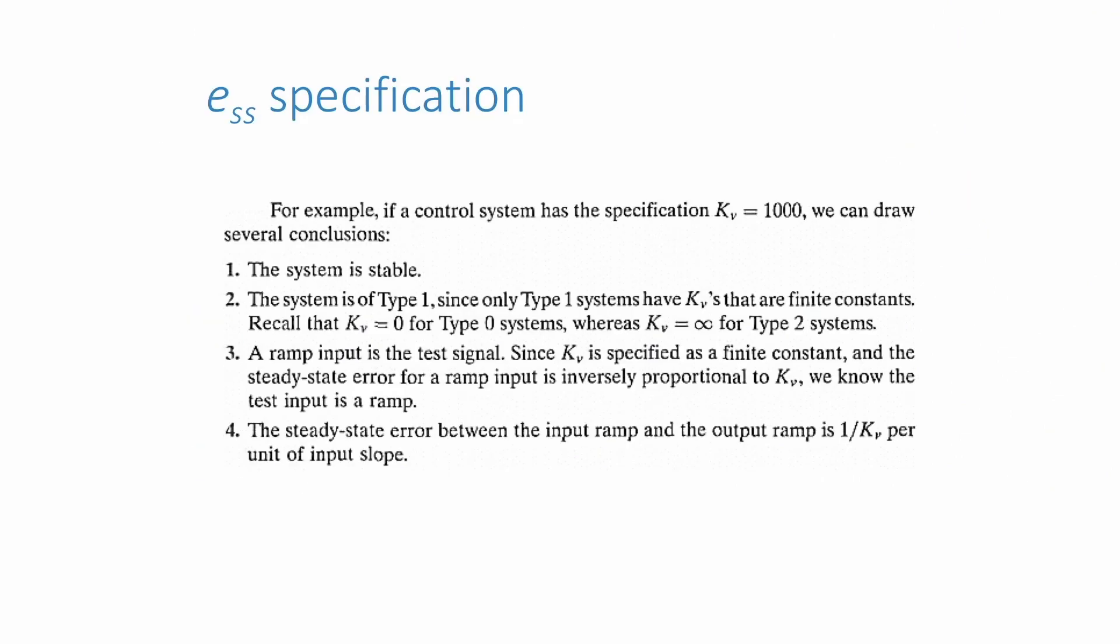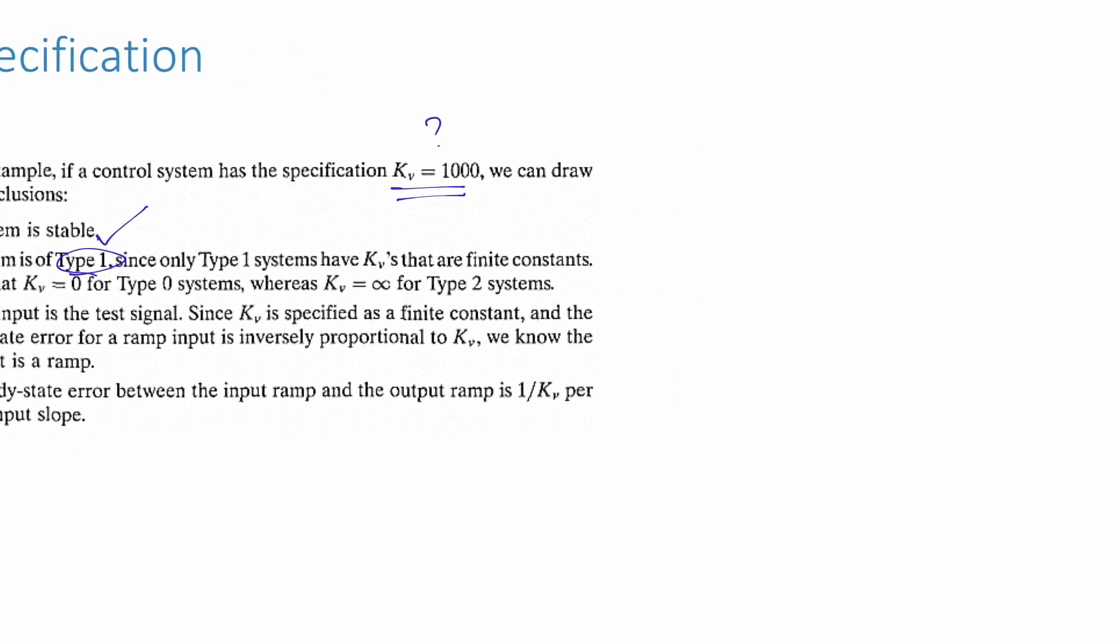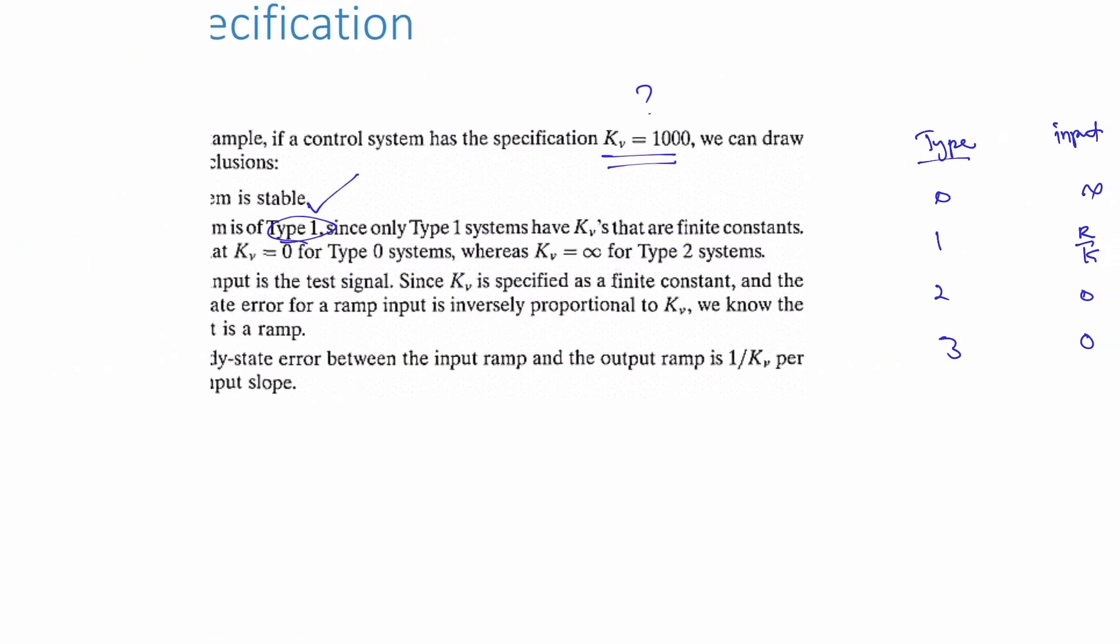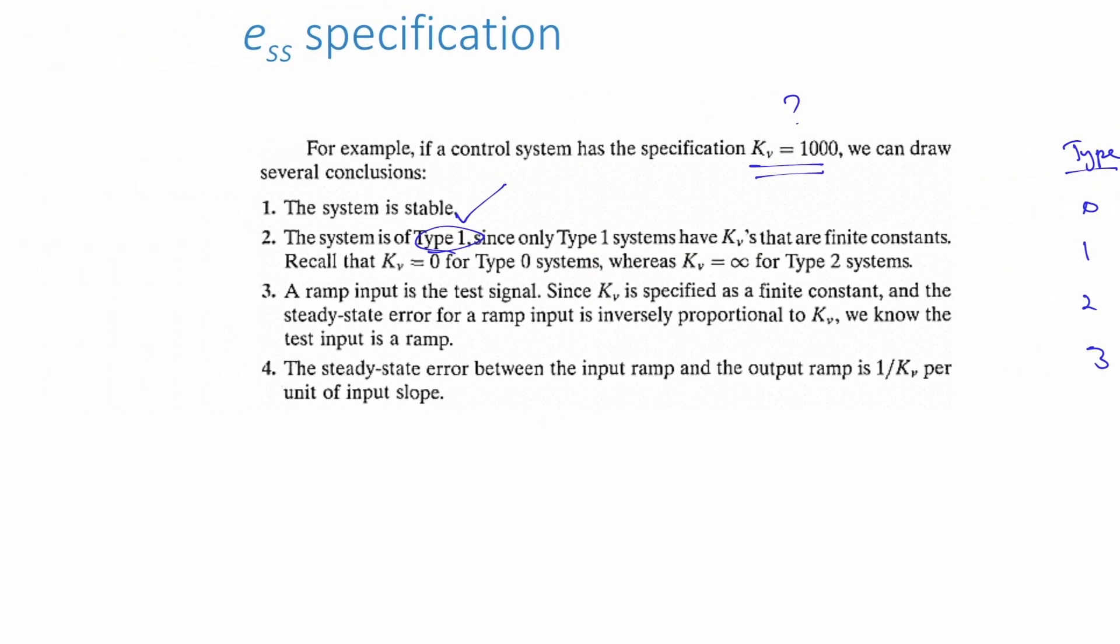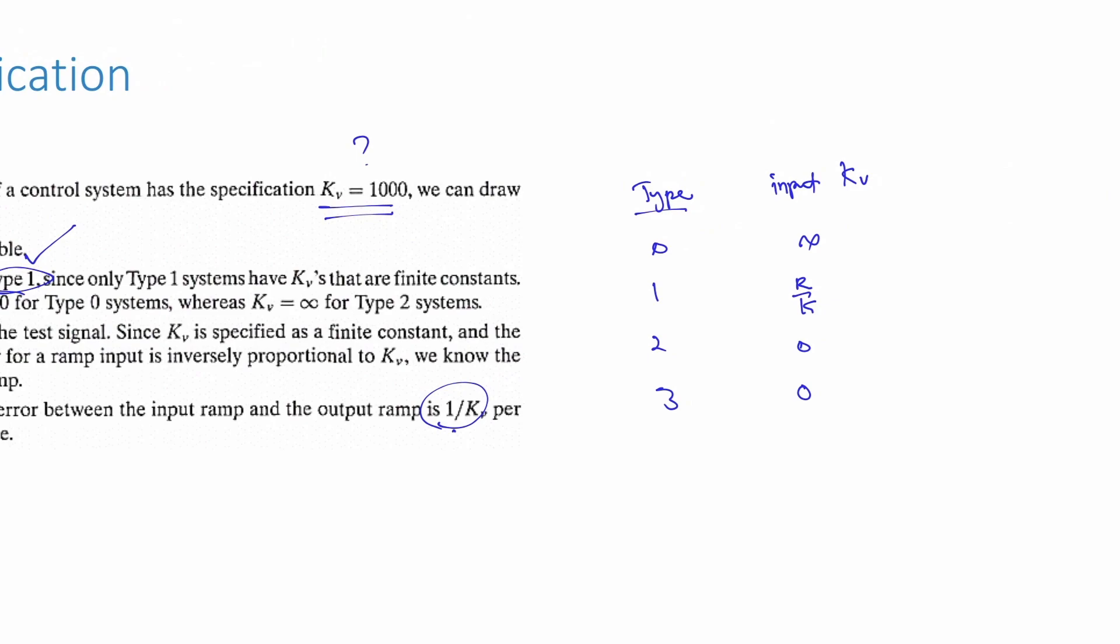Given a value for any static error constant, we can infer the specification of the system. For example, if the system has Kv equals to 1000, we can conclude that the system is stable. The system is type 1 since only type 1 will have a finite constant. The test signal or input to the system is a ramp input. And finally, the steady state error between the ramp input and the ramp output is 1 over Kv.